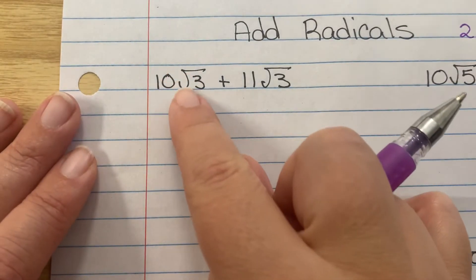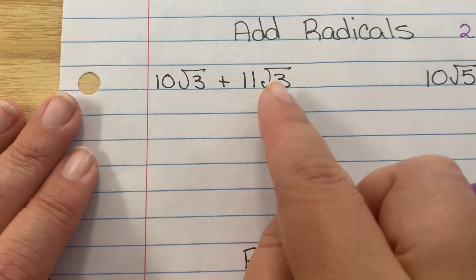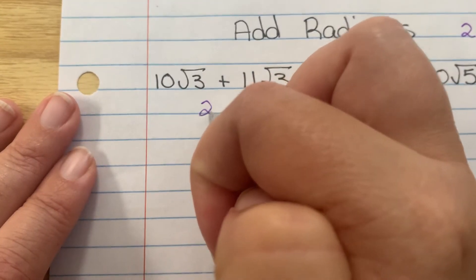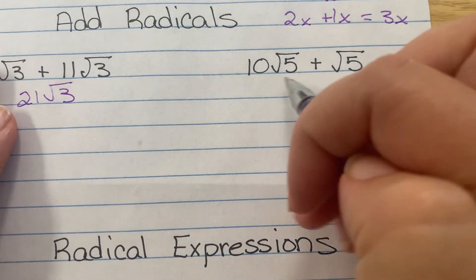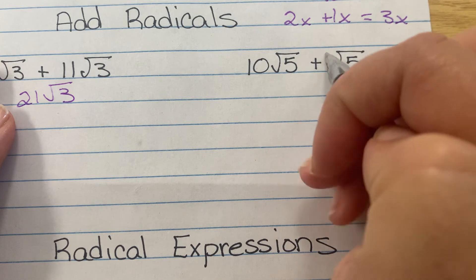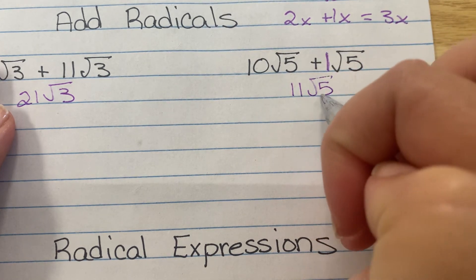So you do the same thing. So this would be 10 square root of 3 plus 11 square root of 3 would be 21 square root of 3. And over here, this would have that hidden 1, so there would be 11 square root of 5.